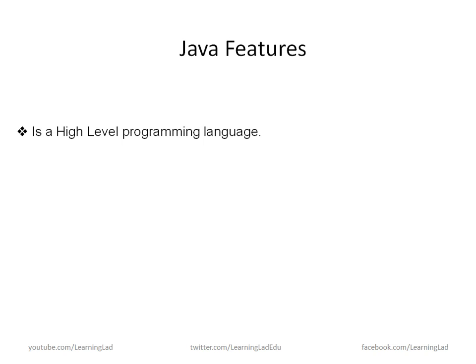Now we are going to see some features of Java. It's not possible to discuss all the features available in Java, but I'm going to stress on some important ones. The first thing is Java is a high-level programming language, just like C and C++. It is easy to learn for beginners and also allows us to write programs very easily.